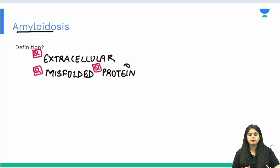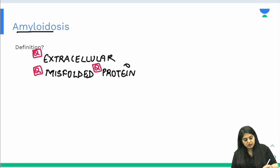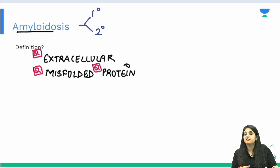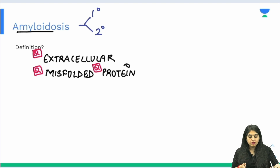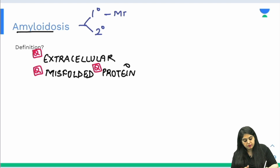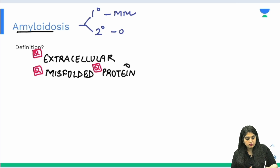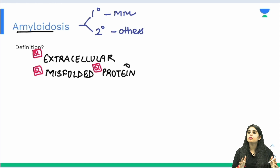When does this situation arise in our body? Amyloidosis is of two types: primary amyloidosis and secondary amyloidosis. In primary amyloidosis, multiple myeloma is the key disease. In secondary amyloidosis, all the other diseases come in.